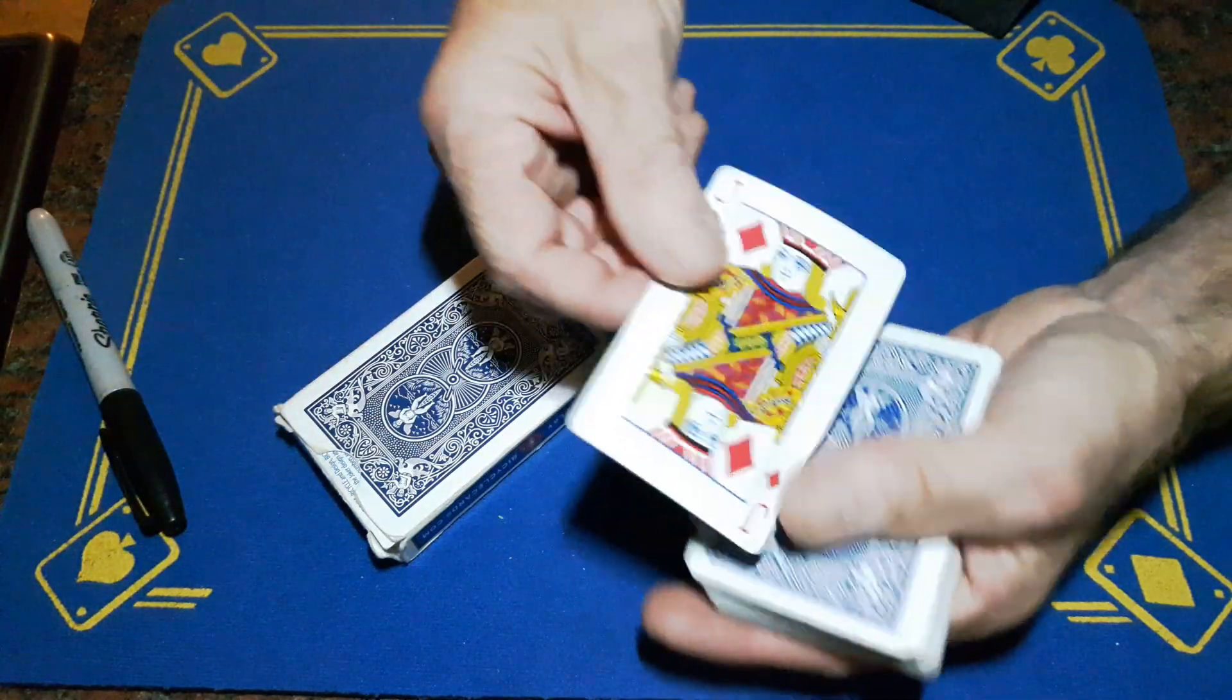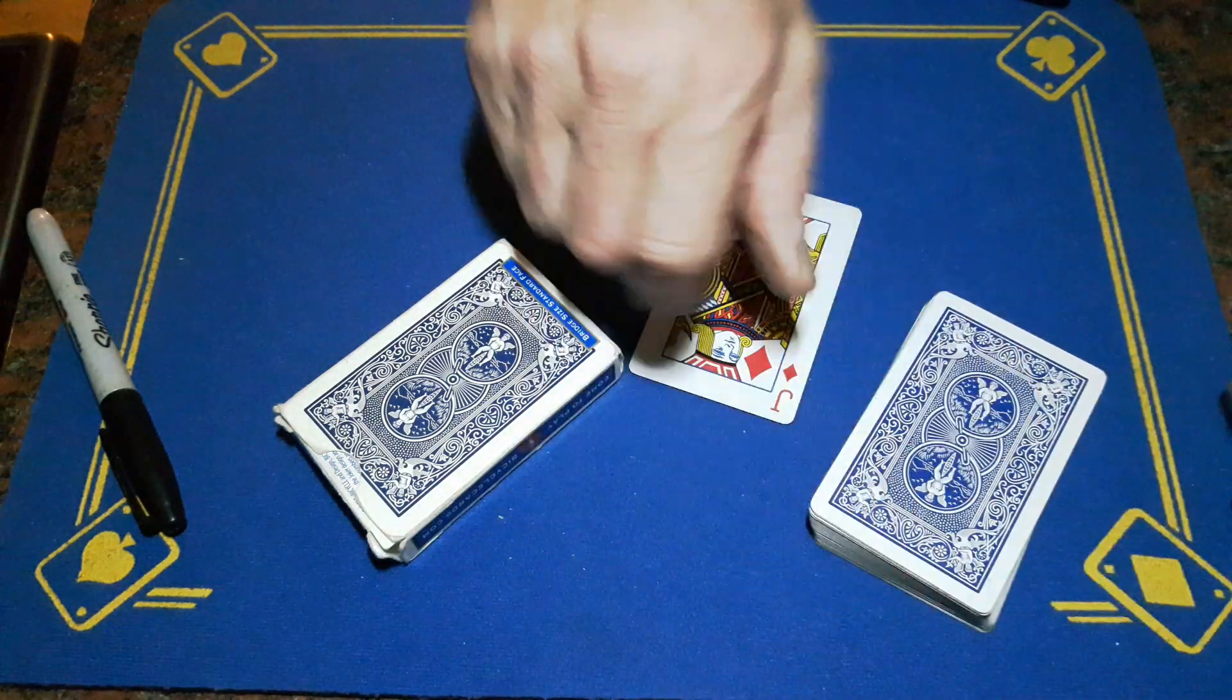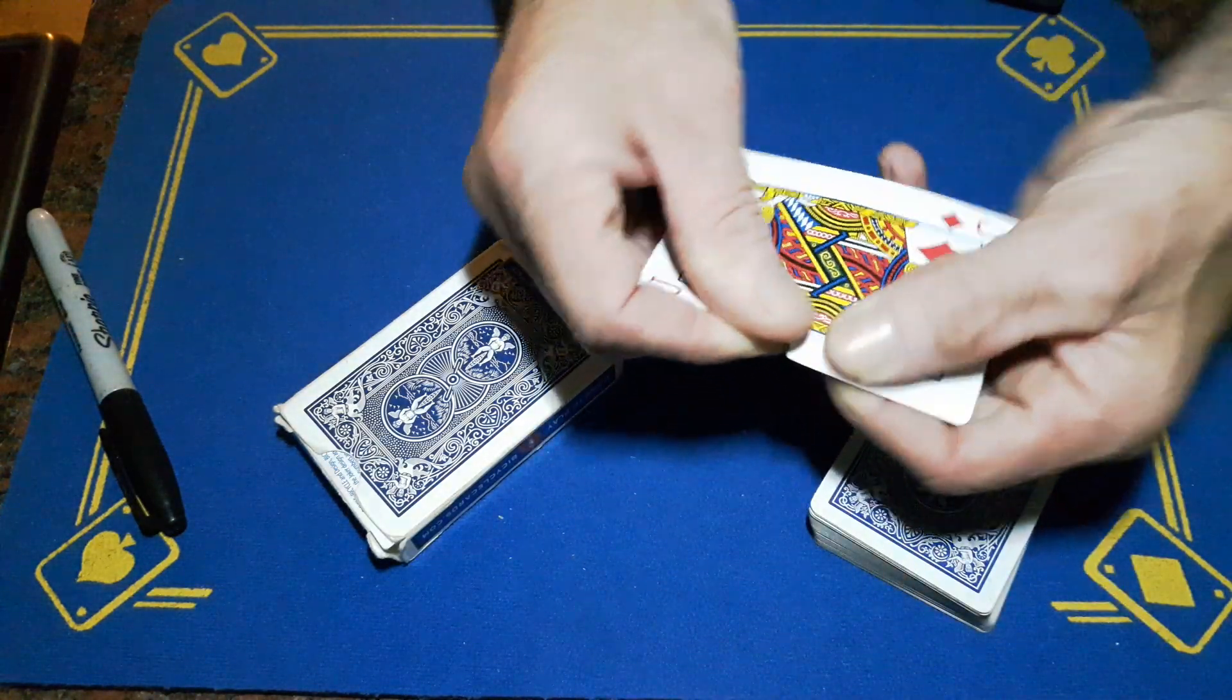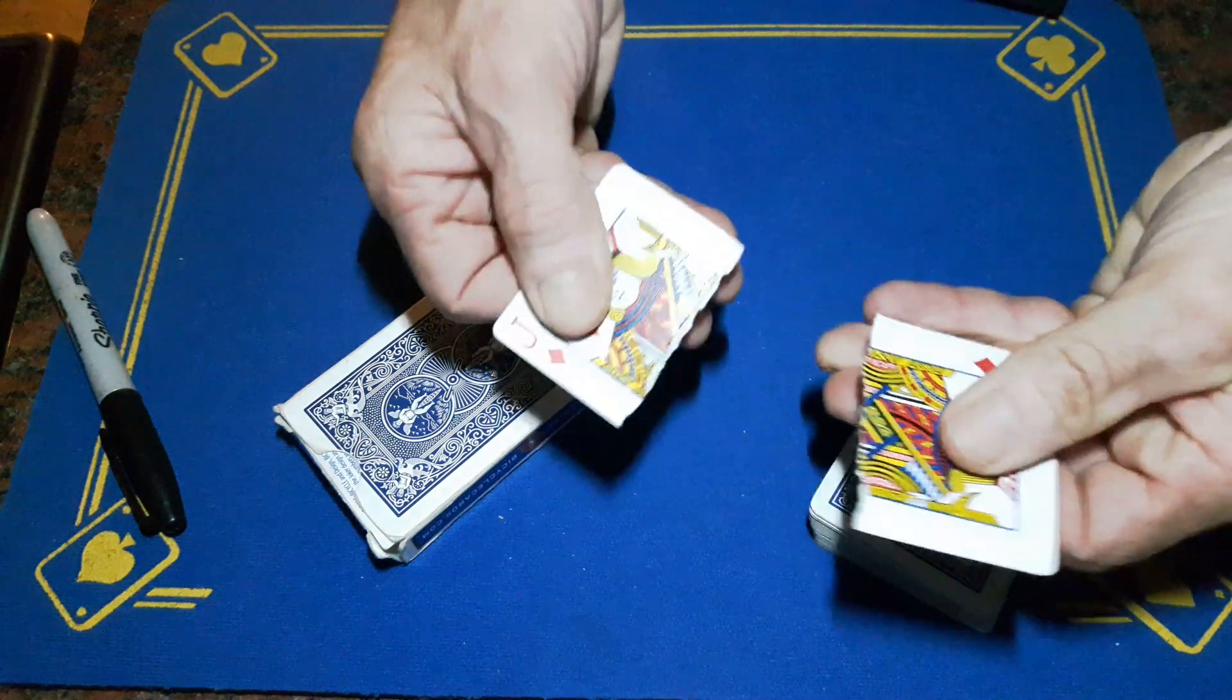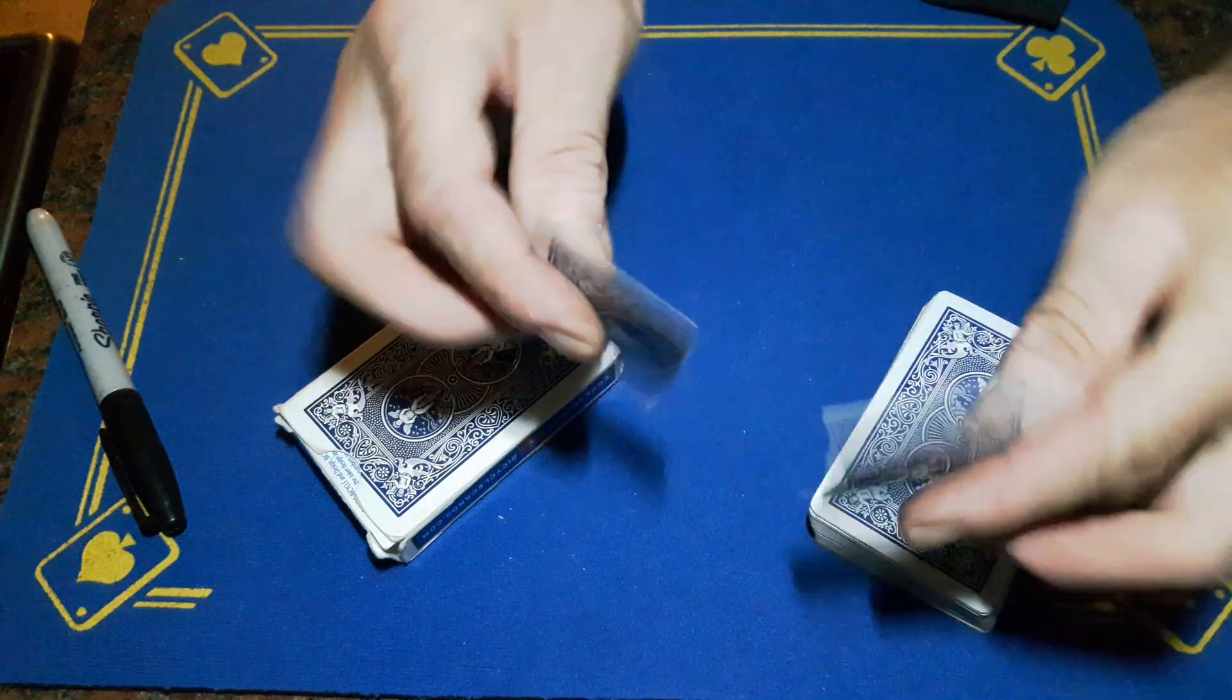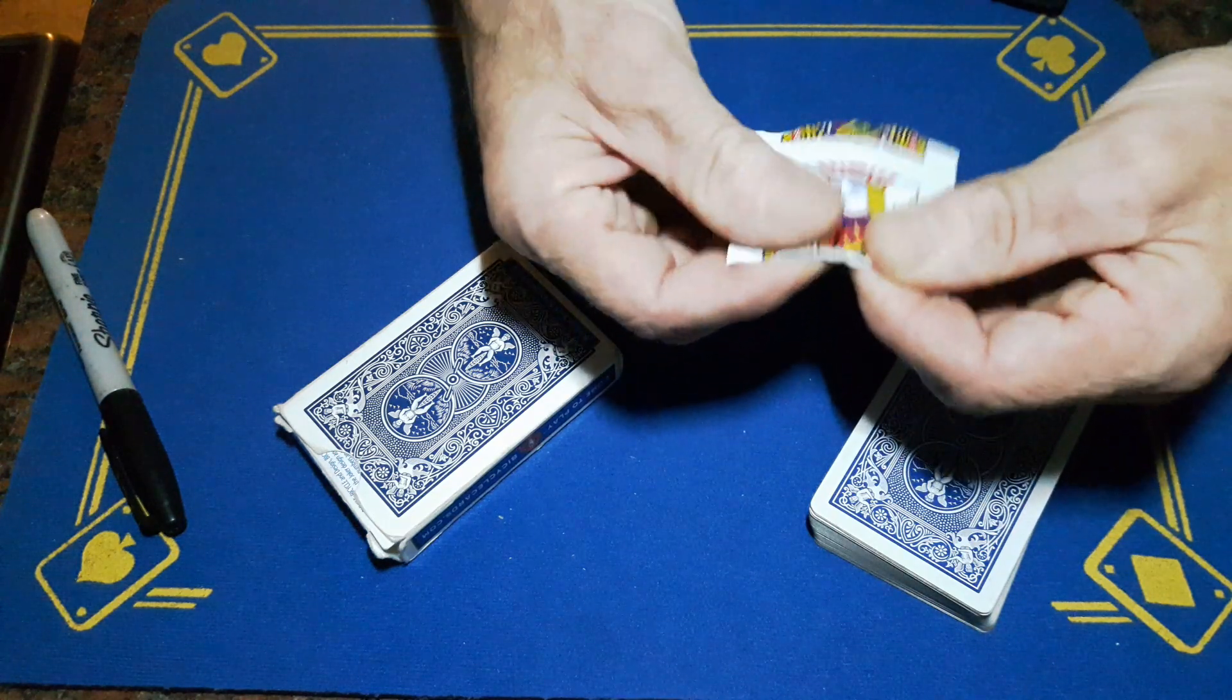So you chose the jack of diamonds and we've signed the back of the jack. We're going to take the jack and we're going to rip it up, but make sure when you rip it they don't see that this has nothing written on the back. And we're going to rip it this way.